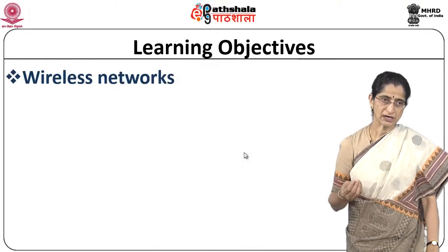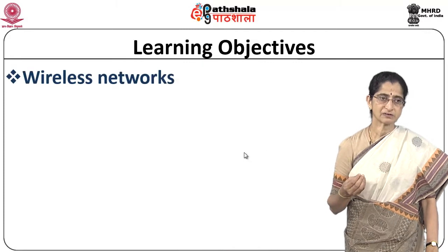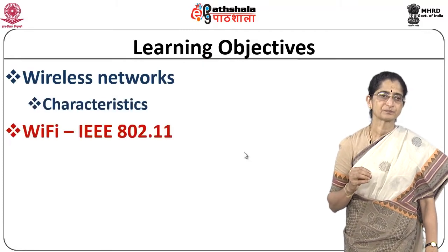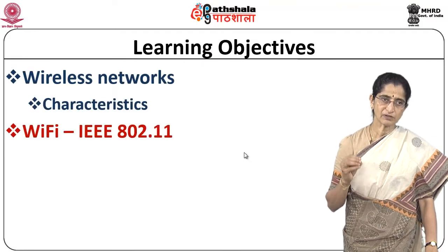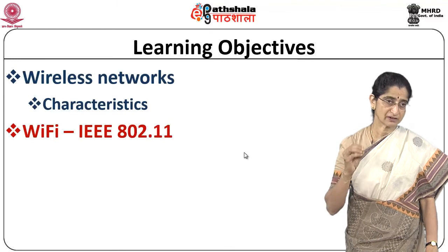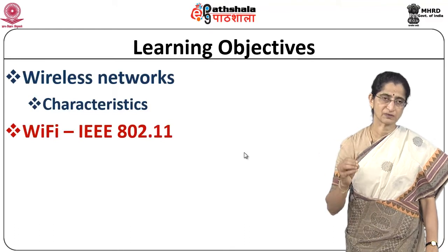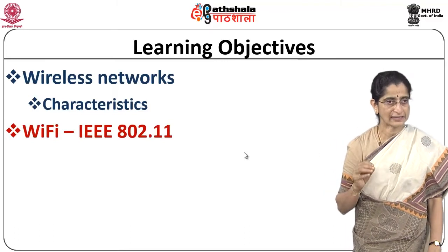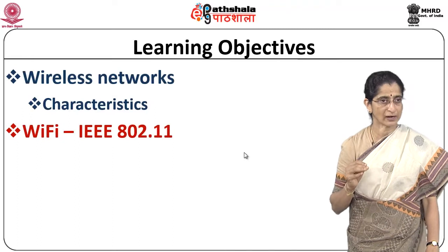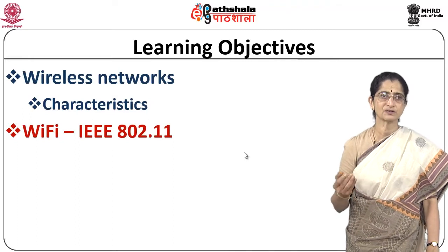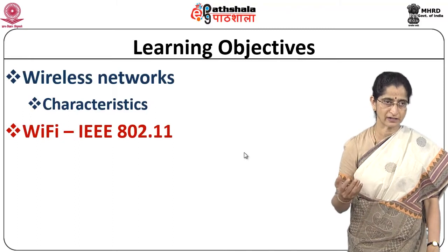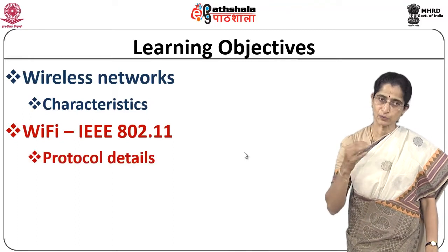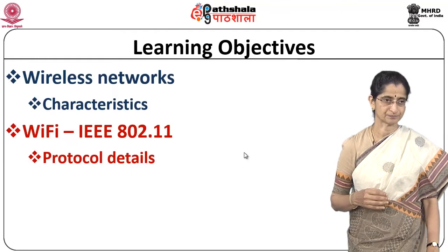To start with, we will take a look at the different characteristics of wireless networks, and then we will look at some of the standards. In this module, we will cover Wi-Fi, which is the wireless LAN standard that goes by the name IEEE 802.11, and we will look at the details of that particular protocol.